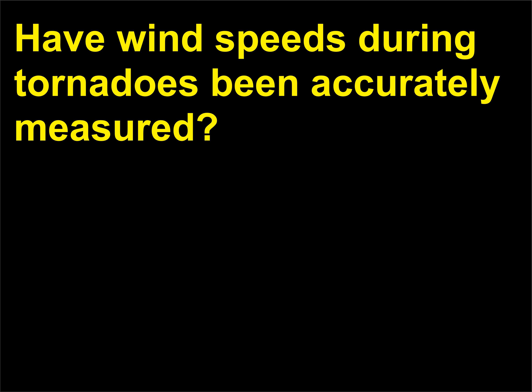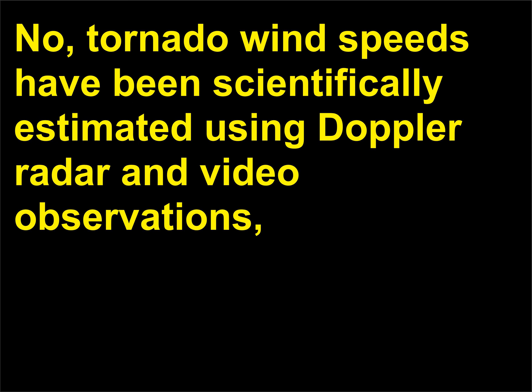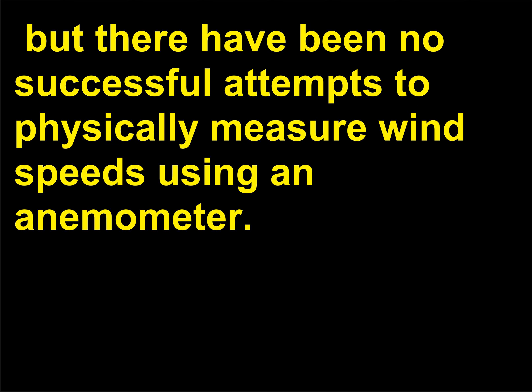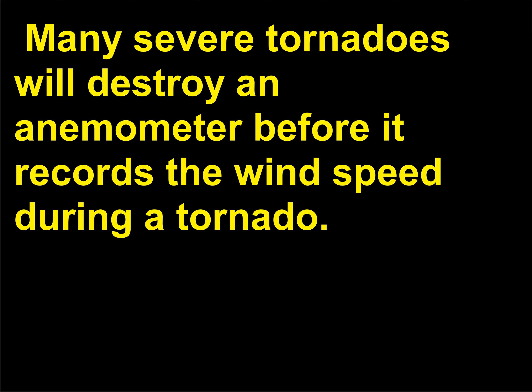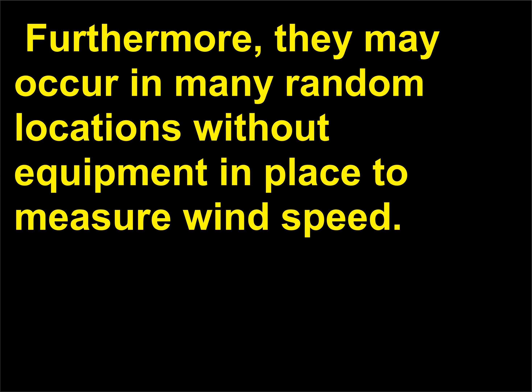Have wind speeds during tornadoes been accurately measured? No — tornado wind speeds have been scientifically estimated using Doppler radar and video observations, but there have been no successful attempts to physically measure wind speeds using an anemometer. Many severe tornadoes will destroy an anemometer before it records the wind speed, and furthermore they may occur in random locations without equipment in place to measure wind speed.